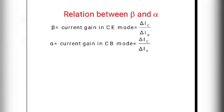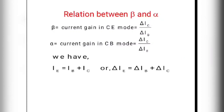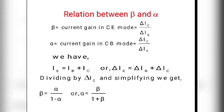Alpha (α) is the current gain in common base mode: α = ΔIC / ΔIE. Since IE = IB + IC, we can write ΔIE = ΔIB + ΔIC. From this we can find: β = α / (1 − α), or α = β / (1 + β). The alpha value is slightly less than 1, while beta value is typically 200–300.